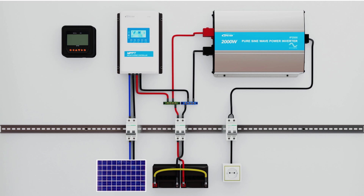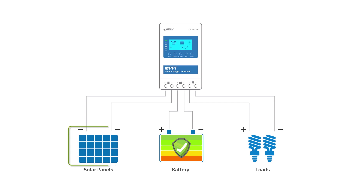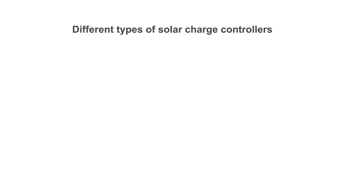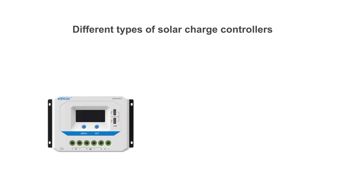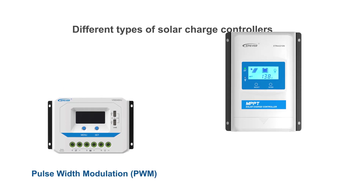The solar charge controller is one of the main components of the off-grid solar system. Simply put, it manages charging the battery bank. A charge controller is a voltage or current regulator which ensures a healthy charge profile for the batteries and protects them from overcharging. The solar charge controller goes between the solar panels and the battery.